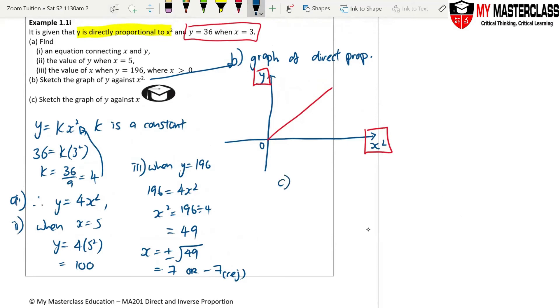But for c, it's very tricky. We know that y equals 4x². 4x² - what shape does the graph look like? It's a U shape.